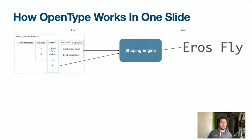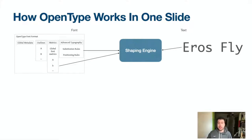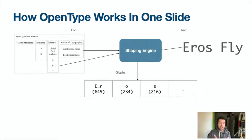Let me show you how the OpenType font system works in one slide. On the right, you have the text coming into the system — things that you type or read from a file. On the left, you have a font with the metrics that tell you how big things are and the substitution and positioning rules we've talked about. In the middle, we have something called a shaping engine — in Linux that's a piece of software called HarfBuzz. The job of the shaping engine is to take the text, apply the rules and metrics, and work out how this should be laid out. In this particular font there's a ligature that combines the E and the R into one glyph, and the system tells us which glyph IDs we have and how wide they are.